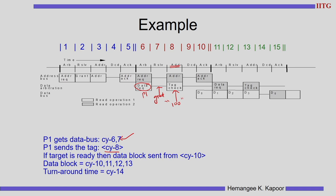When this tag goes onto the bus, P2 — who is supposed to receive the data — checks the tag because P2 wanted the data with transaction ID 100. When the 100 response is coming, P2 indicates it is now ready to receive the data. If P2 is busy then this transaction cannot happen. Once P2 shows willingness to accept the data, P1 can start sending data from the ACT cycle — that is cycle 10. D0 goes in cycle 10, then D1, D2, D3 in the following cycles, and then clock cycle 14 is kept empty for the turnaround time.